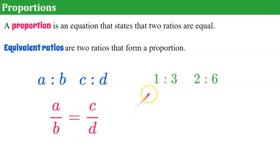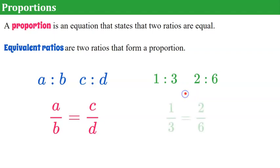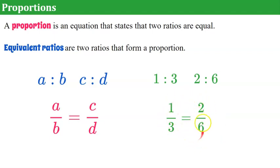Here are some numbers. We have a ratio of 1 to 3 and a ratio of 2 to 6. These are equivalent ratios. 1 to 3 is equal to 2 to 6, so we say that they are forming a proportion. Because if I simplify 2 to 6, it simplifies to 1 to 3, and there we have equality.